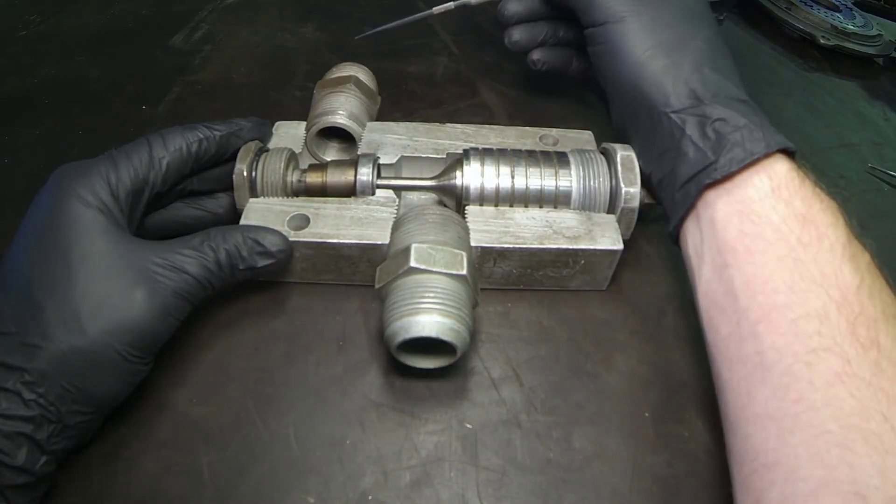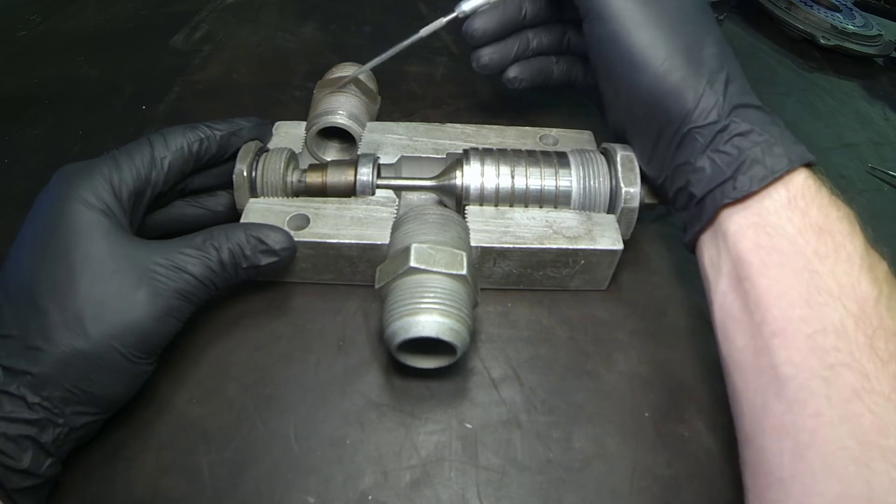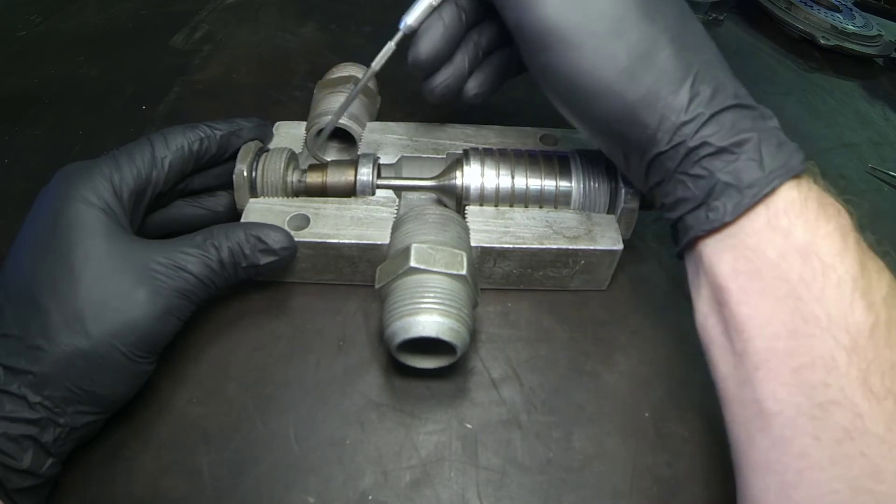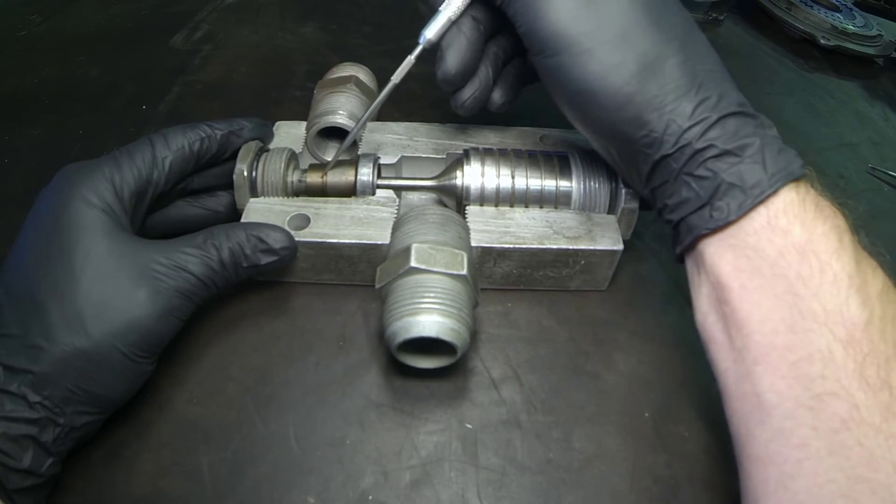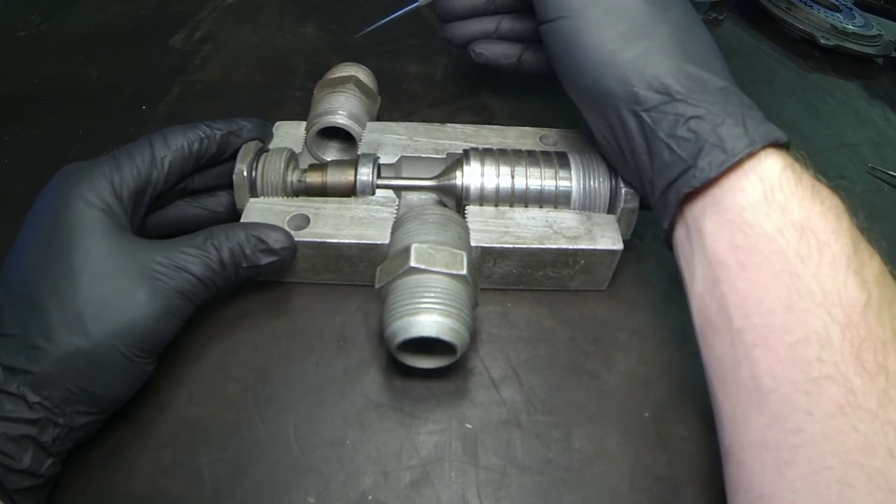When that cylinder is extended and the load is trying to get that oil to come back out of the base end, it's forced back in here. That high pressure actually holds this seat closed, which traps that oil in the base end of the cylinder.